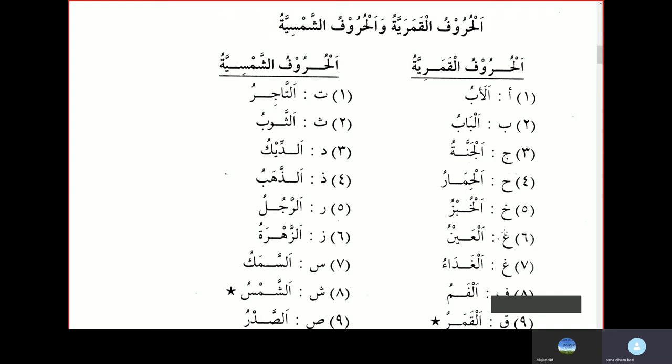First is Al-Abu, the Father. Second is Al-Baabu, the Door. Third is Al-Jannatu, the Garden. Al-Himaru, the Donkey. Al-Khubzu, the Bread. Al-Ainu, the Eye. Al-Ghadawu, the Lunch.